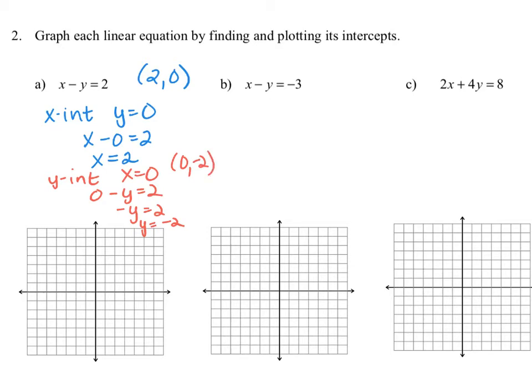We're going to plot both of those points and sketch the result. The x-intercept occurs at x equals 2, and the y-intercept occurs at (0, negative 2). We're assuming that each one of these grid marks represents one unit. We can sketch this line that goes through those points, and we have graphed our linear equation simply by plotting those two intercepts.